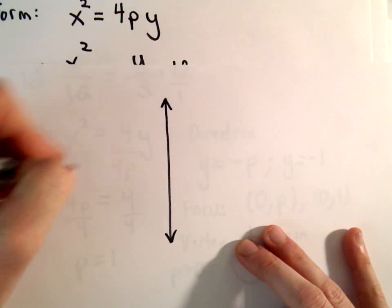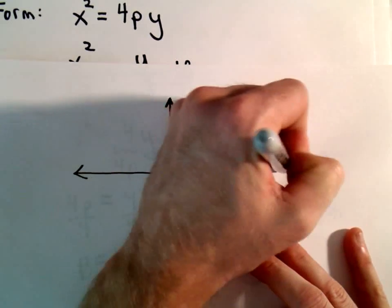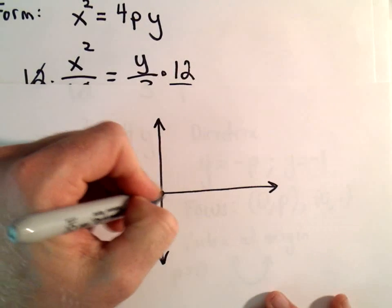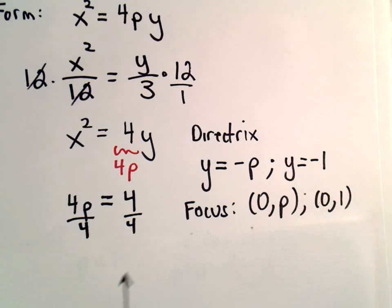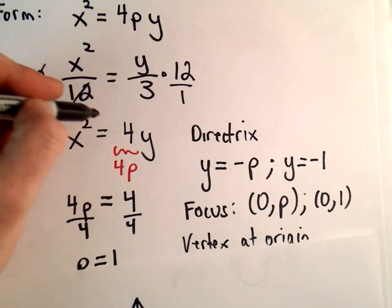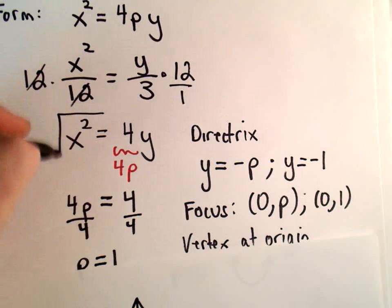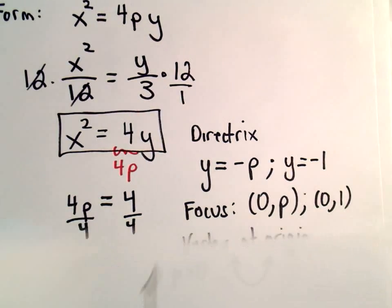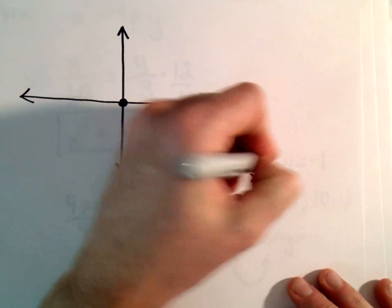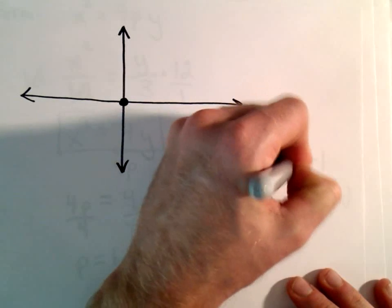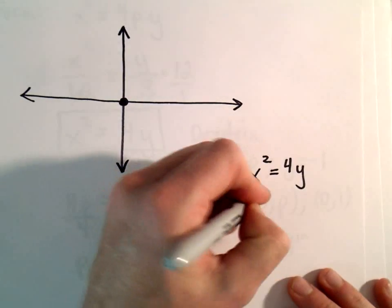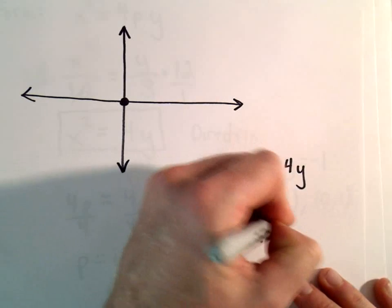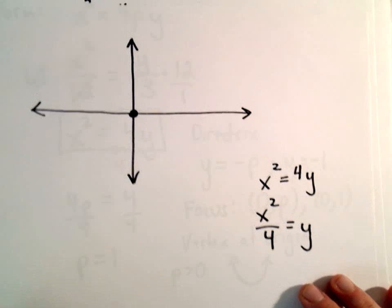We know that it opens upwards and the vertex is at the origin. I'll plot a couple extra points and put those on there. Our equation, we ended up with x squared equals 4y.